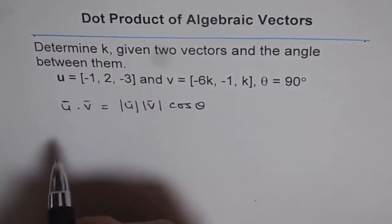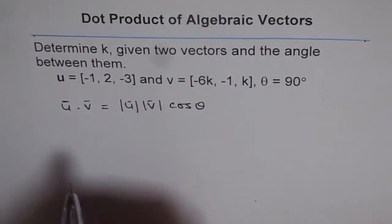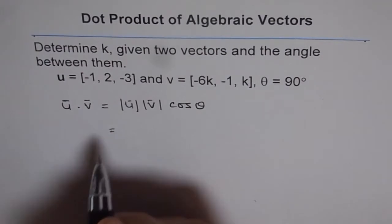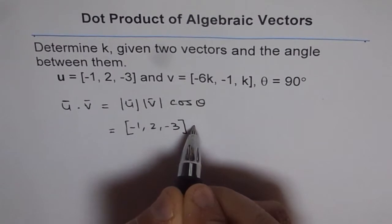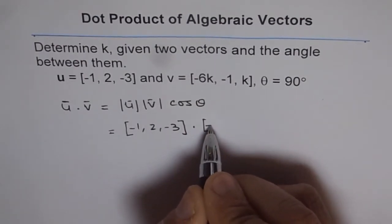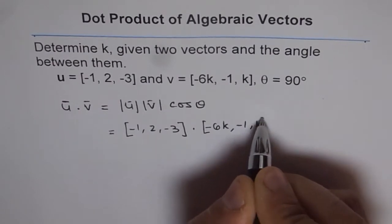The other way is finding the dot product of algebraic vectors, which is [-1, 2, -3] · [-6k, -1, k].